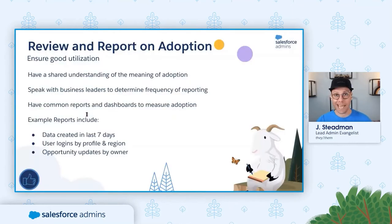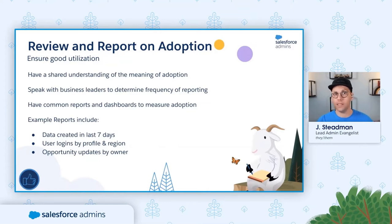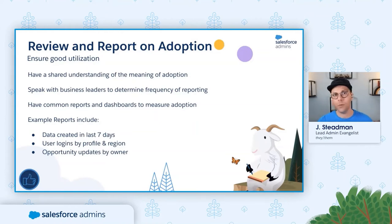Reviewing adoption will give you a tangible indication of whether or not your configuration is being used by your org. By reviewing adoption, you can catch any new trends while they're still relatively new, which can inform your stakeholder communications or your user guide. After you discover that adoption of a feature needs improvement, you can meet and discuss with relevant stakeholders to better understand what may be preventing them from using the system. By communicating this way, you are involving users, which makes them feel empowered, and you're also gathering useful information to improve your configuration.